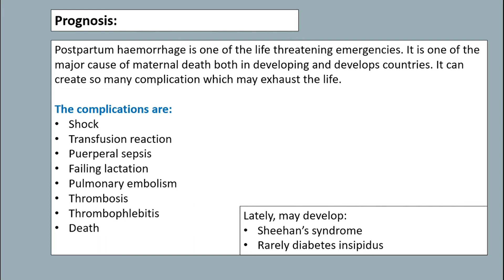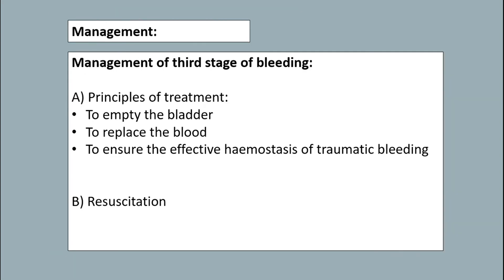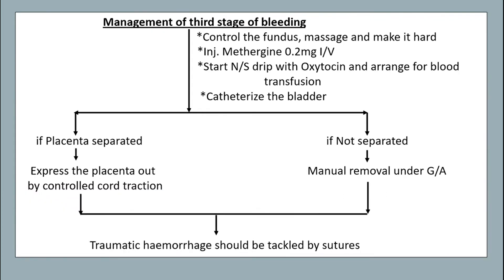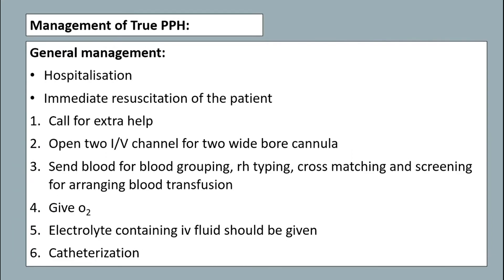Management of third stage bleeding: principles of treatment include emptying the bladder, replacing the blood, and ensuring effective hemostasis of traumatic bleeding, and resuscitation. The management of third stage bleeding includes control of the fundus by massage and making it hard, injection of methylergometrine, IV drip with oxytocin, arrange for blood transfusion and catheterization. If the placenta is separated, express it out by controlled cord traction. If not separated, it may be manually removed under GA, and postpartum hemorrhage should be tackled by sutures.